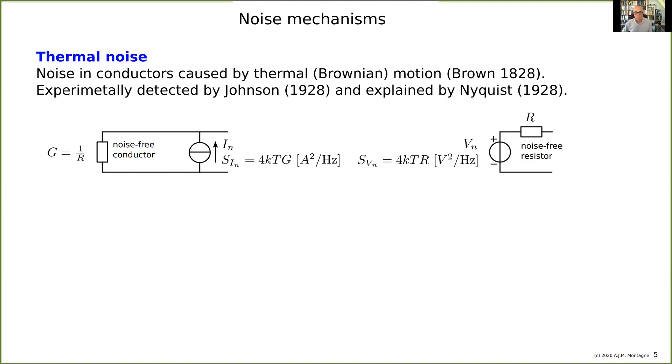An equivalent model is that you model a noisy resistor as a noise-free one in series with its noise voltage source of which you model the spectral density, which is then 4KTR volt squared per hertz.